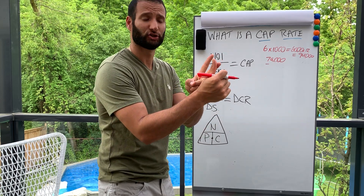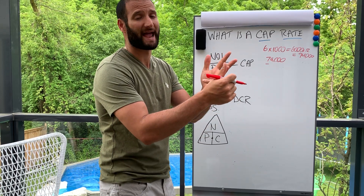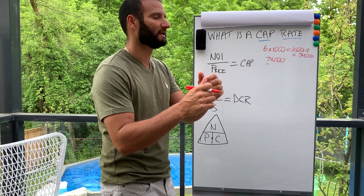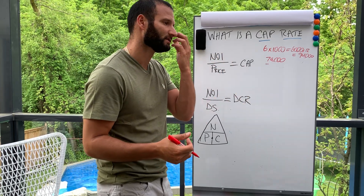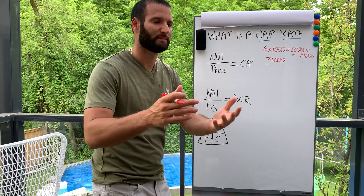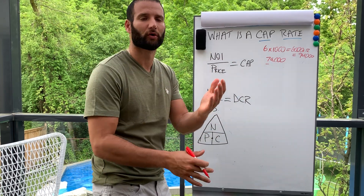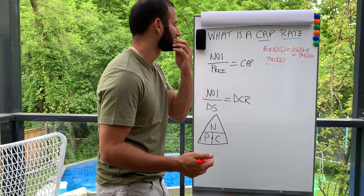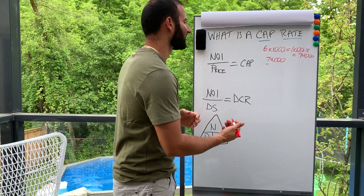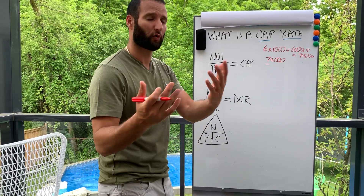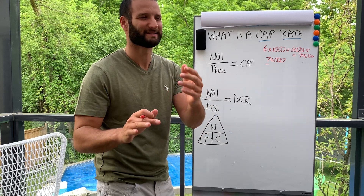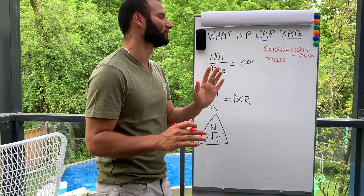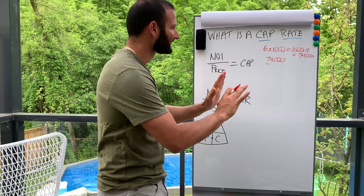Okay, seventy-four thousand annual income, minus your operating expenses. Operating expenses would be property taxes, insurance, any utilities the landlord pays, maintenance, management fees, landscaping, grass cutting, snow removal — anything to maintain the building. A good number to use for operating expenses is 40 percent, though that's not always the case.